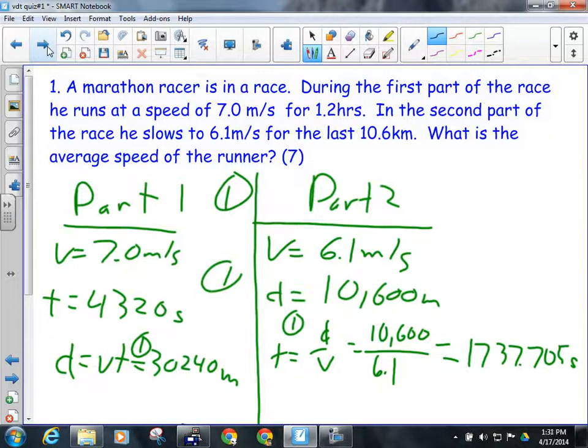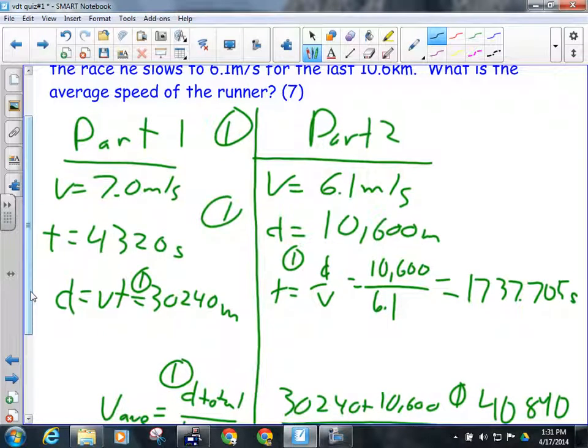So if they have givens, you can give them a mark for that, part one, part two, whoever they organize, as long as they've got givens written down. I'm not sure why I have two in there for givens, but I do. Oh, I know what it is. It's the conversion of kilometers to meters. So if they converted their kilometers to meters, make sure that you give them a mark for that as well.